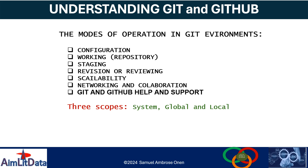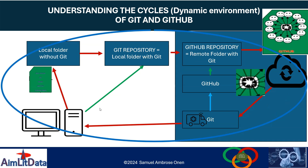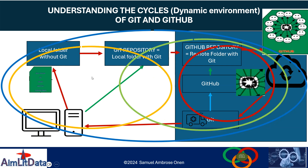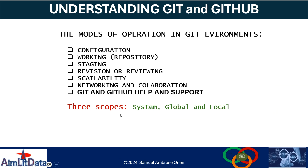There are three scopes of Git you need to understand: the system level, the global level, and the local level. The system level is the actual Git environment — everything about Git. This is like the big oval you see, because at this level you can see everything about Git. When you do things locally, you can override what is at the system or global level. Whatever you do globally and locally will automatically fall under the system level. The next video will demonstrate the scopes clearly.